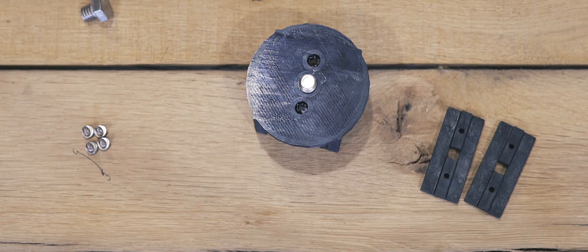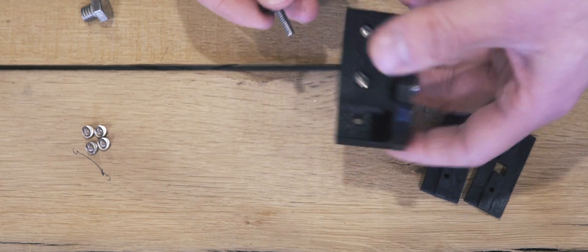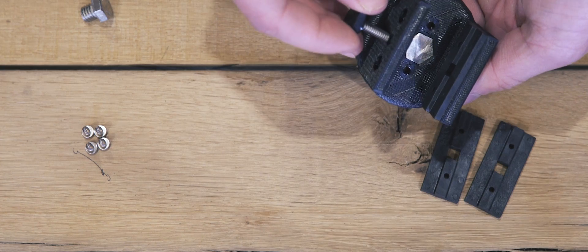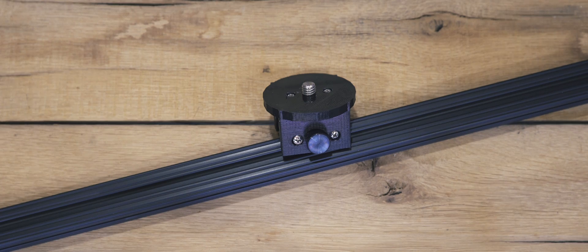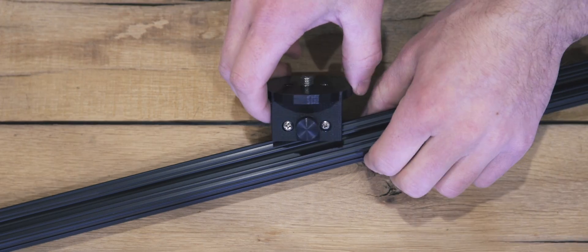Finally, you can thread a 10-24 x 1 inch long thumb screw through the side of the carriage, and this will become your brake. So with the carriage fully assembled, go ahead and slide it onto your rail.